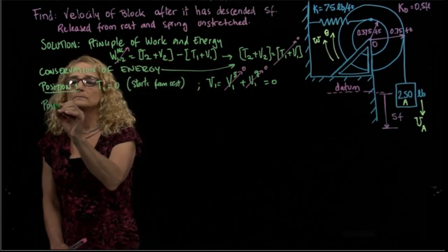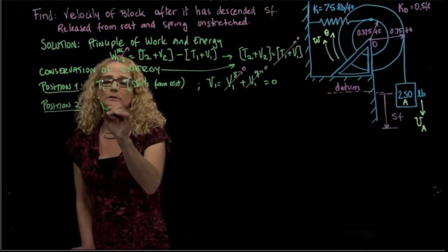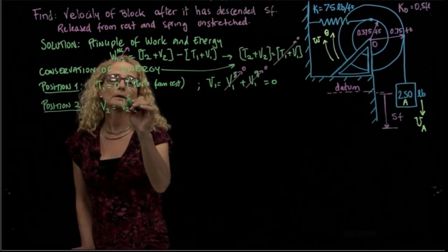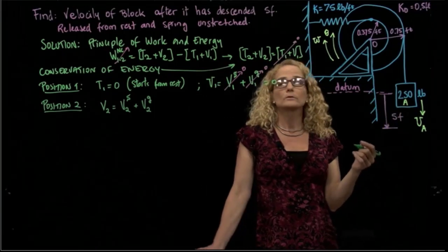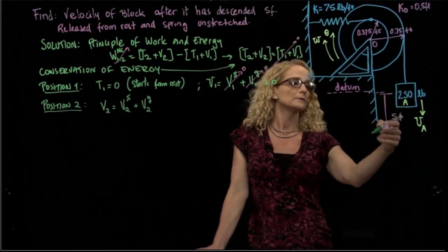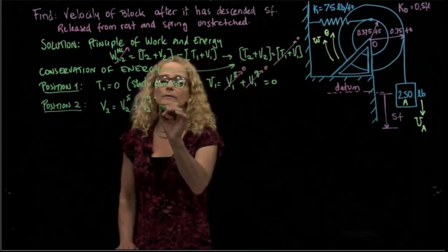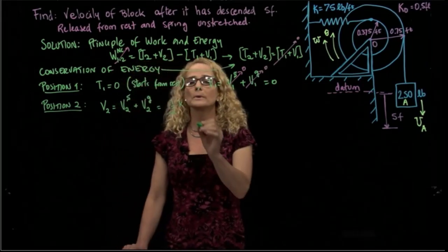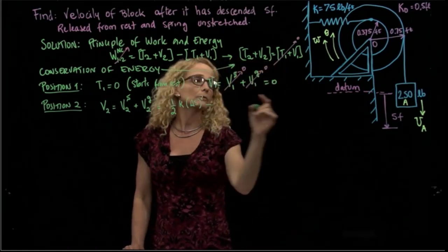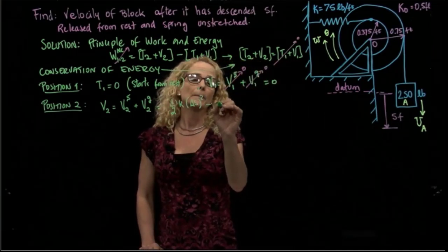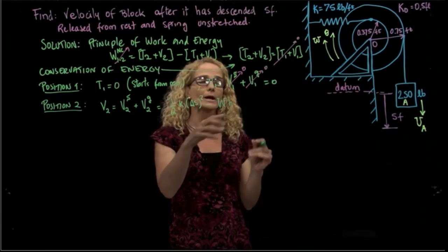For position two, we need to find the potential energy and the kinetic energy. The potential energy is due to the spring and gravity. The gravity part is straightforward because the block has descended five feet, so we lose potential energy equal to the weight times five feet. We write the potential energy as one-half k times the spring stretch squared, minus the weight times the height descended. We now need to find the stretch of the spring.